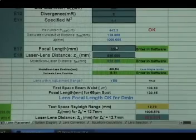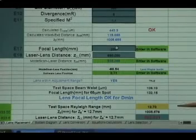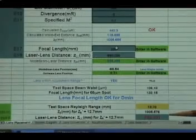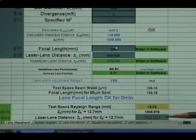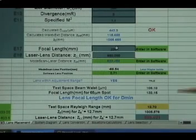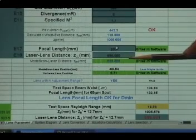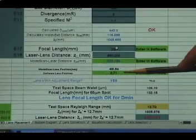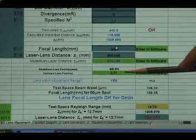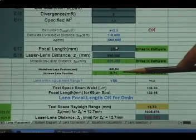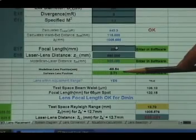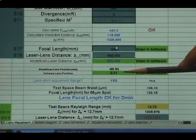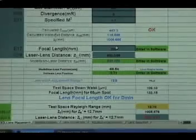The calculator calculates an optimal laser lens distance of 890 millimeters which corresponds to a mode scan laser distance of about 820 millimeters. There's another parameter the calculator calculates called the software lens position which here is 2.7 millimeters. I'll explain what that means later but we have all the parameters now to set up the test.